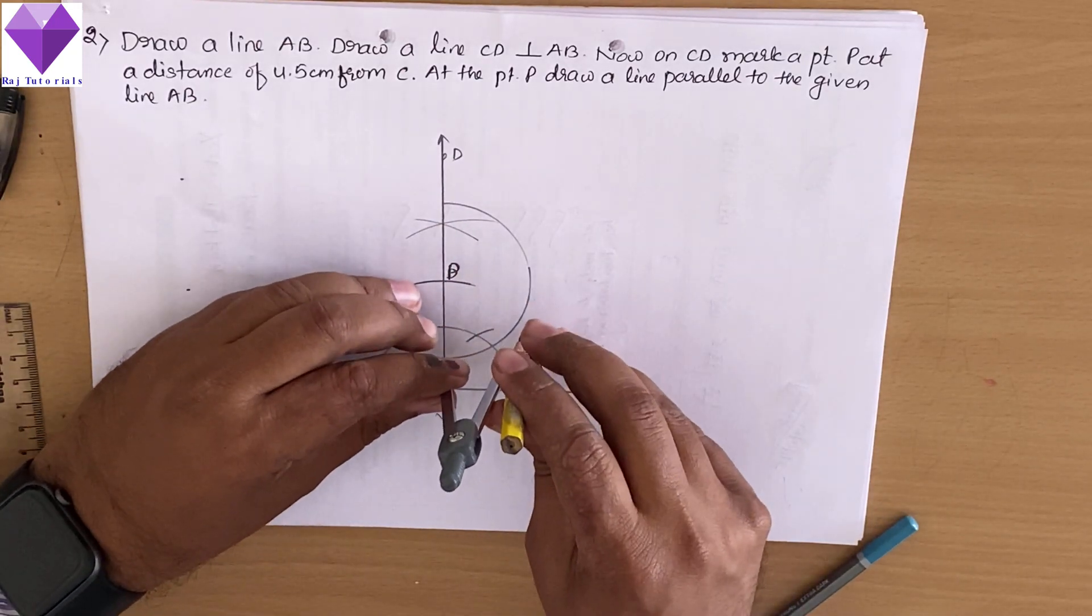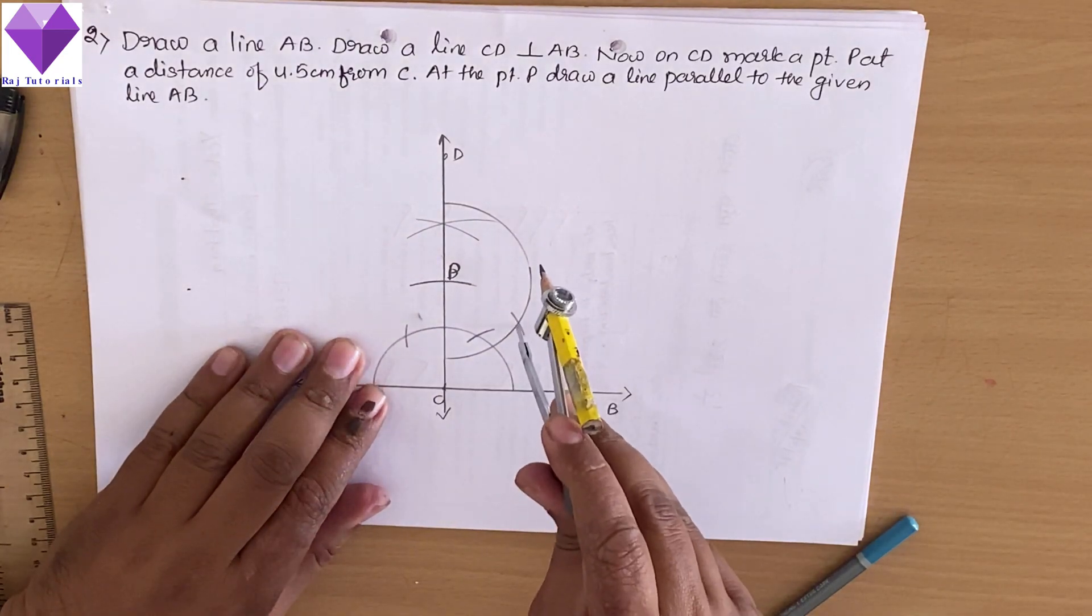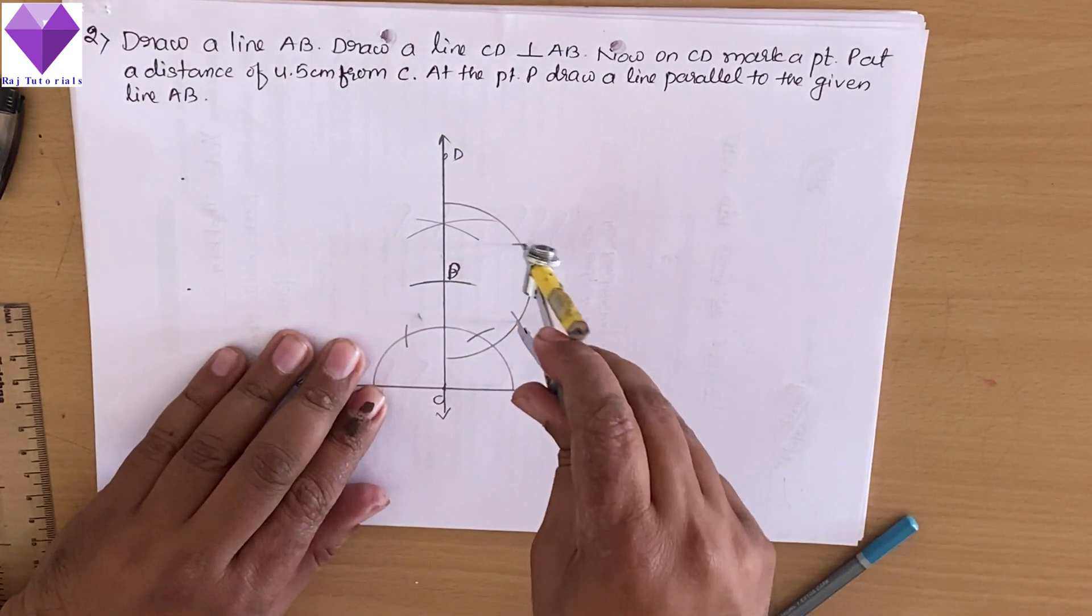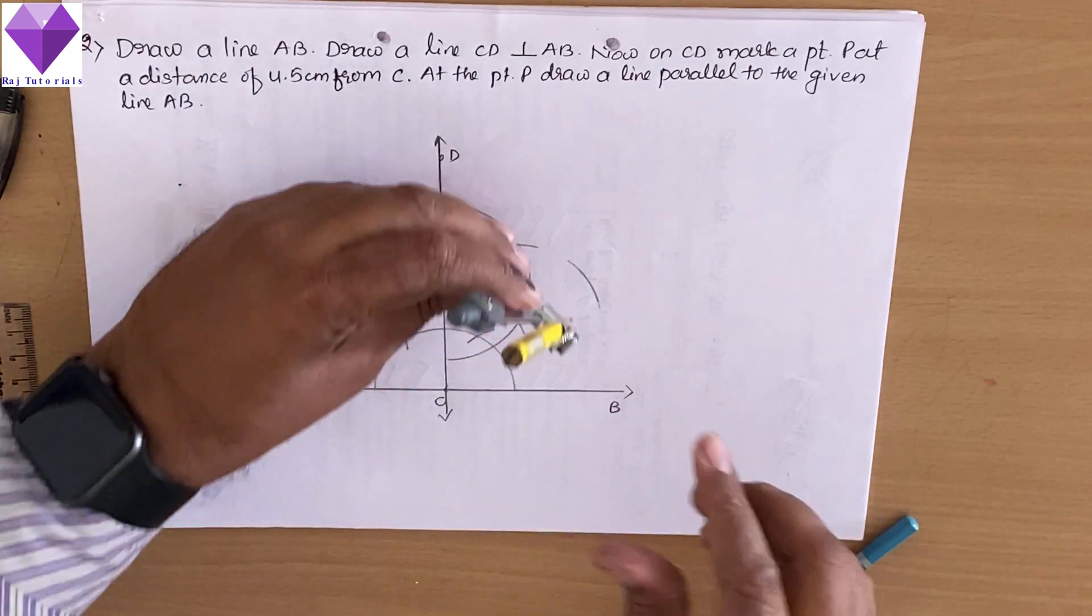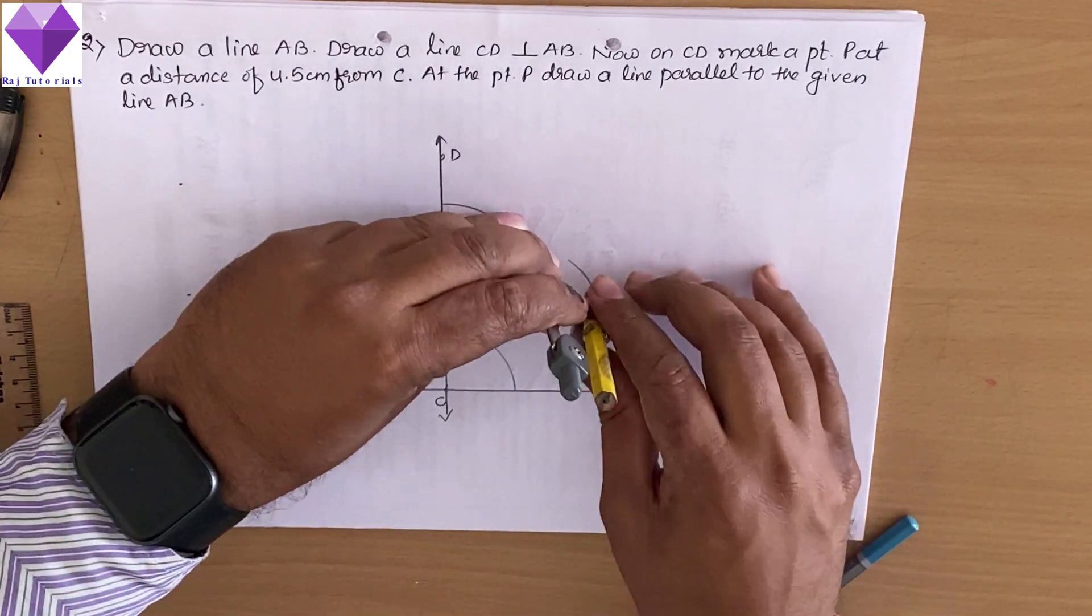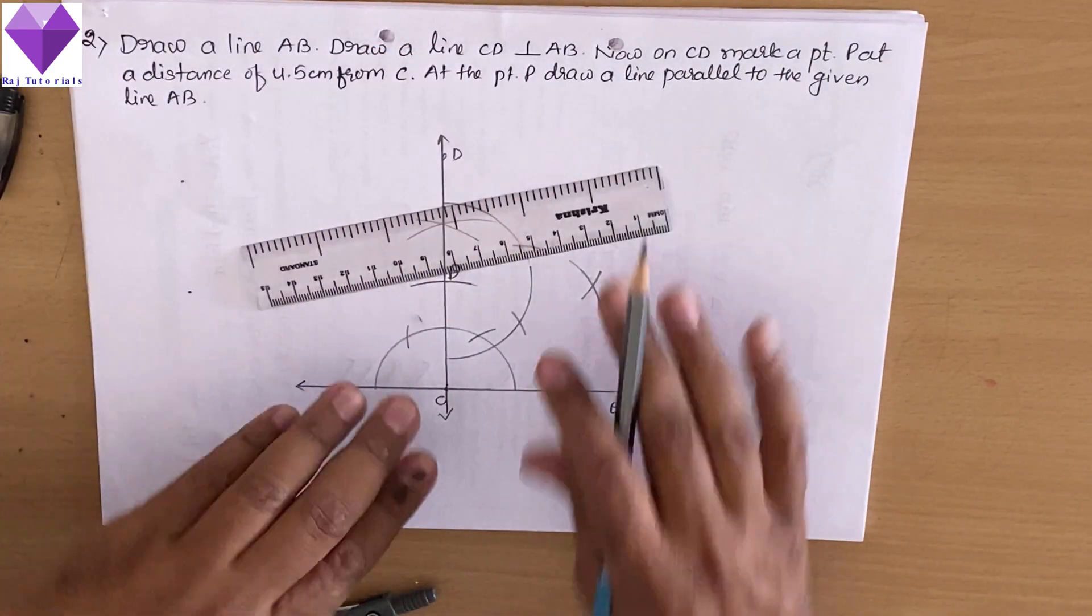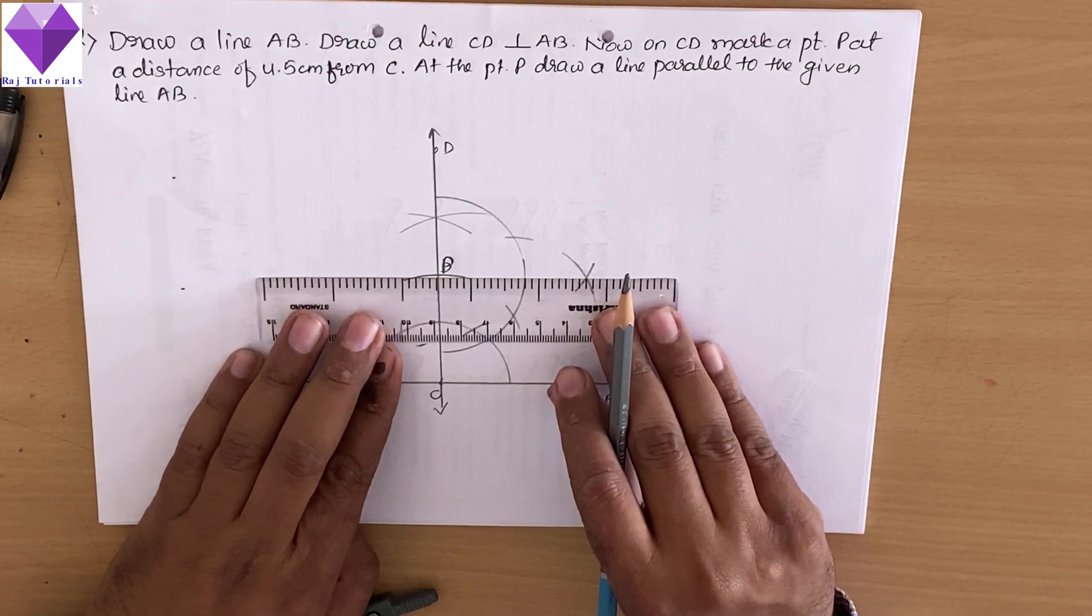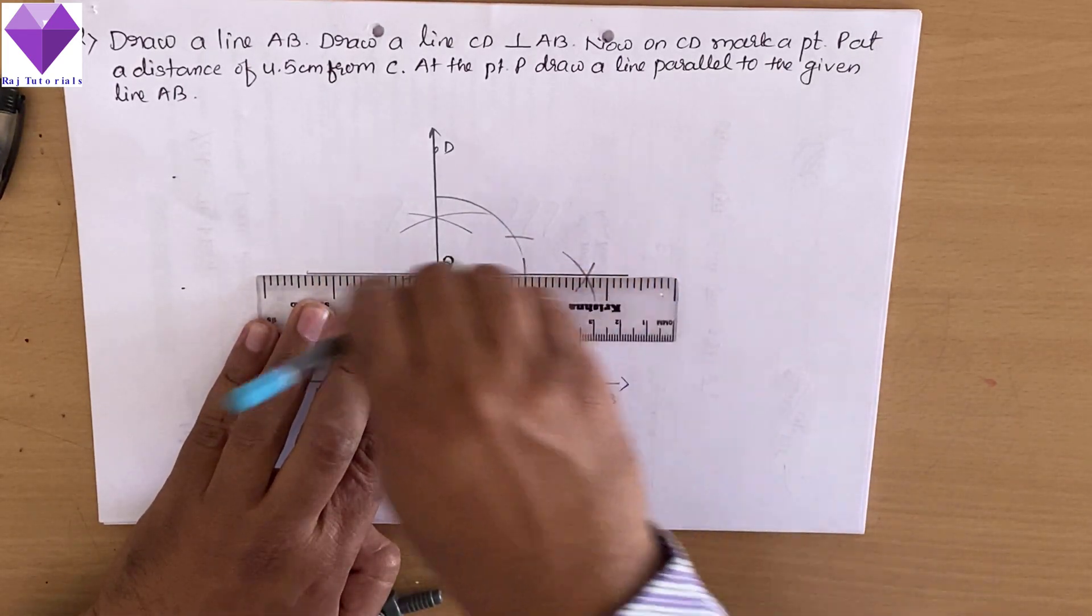Now I will be cutting this semicircle with the same radius two times: one is 60 degrees, one is 120 degrees. Now one arc from 60 degrees, one arc from 120 degrees. So now this point I will be joining with P to get my required parallel line.